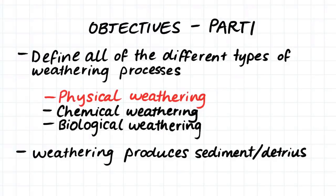Hi guys, this is the first of two videos in which we will define all the different types of weathering processes. In this video we will just look at the different types of physical weathering. In the second part we will have a look at chemical weathering and biological weathering. In the previous video we had a look at how clastic sedimentary rock forms, and this process requires the weathering and erosion of rock to produce the sediment in the first place. So keeping this in mind we will now be looking at the various types of weathering which occurs to produce this sediment or detritus.